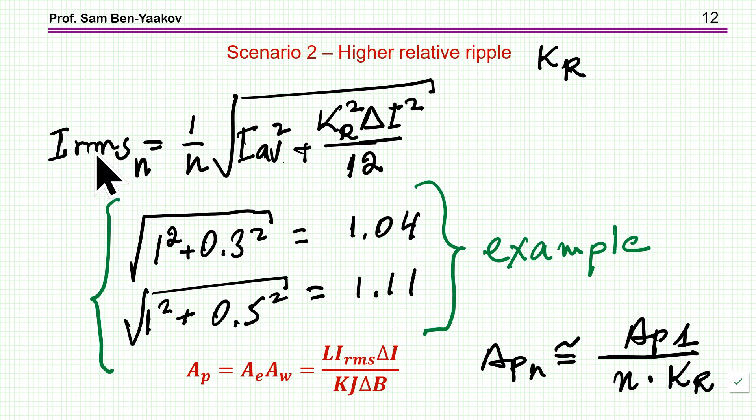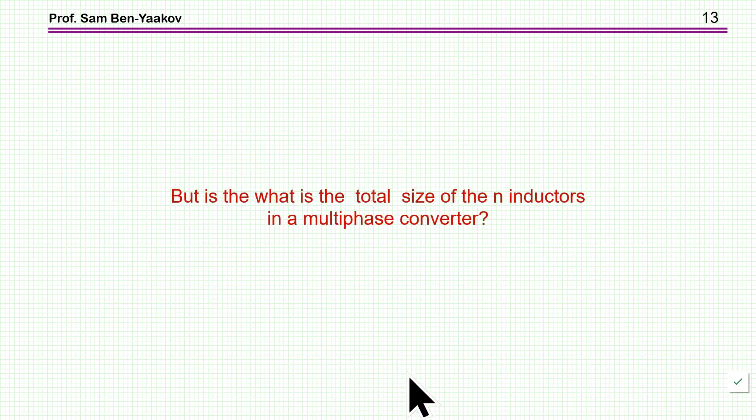Now if you neglect this increase in RMS, which would make AP larger, if you neglect this, then you are left with the fact that L is becoming smaller, and therefore the AP of the inductor in the multi-phase converter will be the AP of the single-phase inductor divided by n first of all, and then divided by k_r. And of course, if k_r is like even times two, then this would be quite a bit of a saving. Okay, so the saving is primarily here. But again, if k_r is very large, then you have to take into account the RMS is becoming larger and you have to correct it here. But the question is, and we understand what is the AP of these inductors in the multi-phase converter, what does it mean about the size and the weight of these inductors?